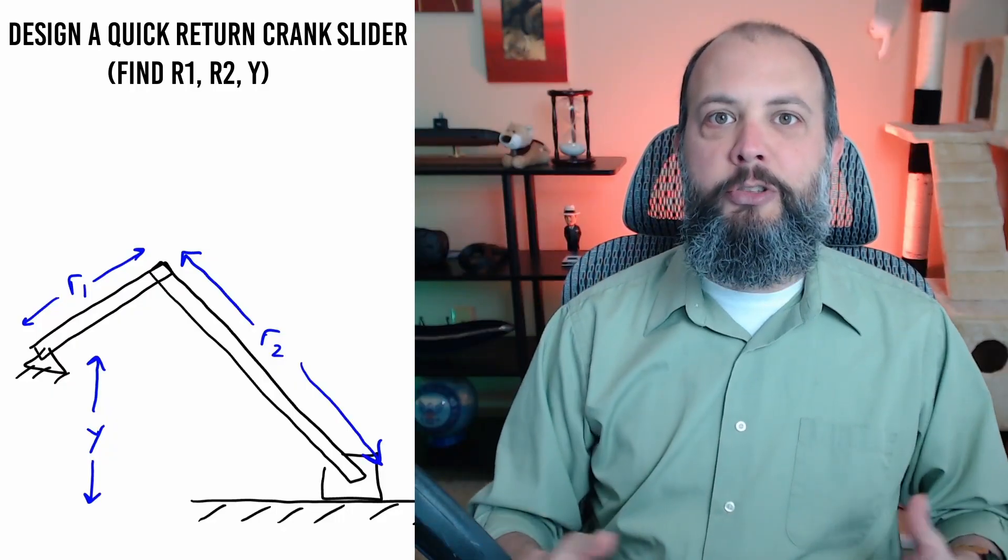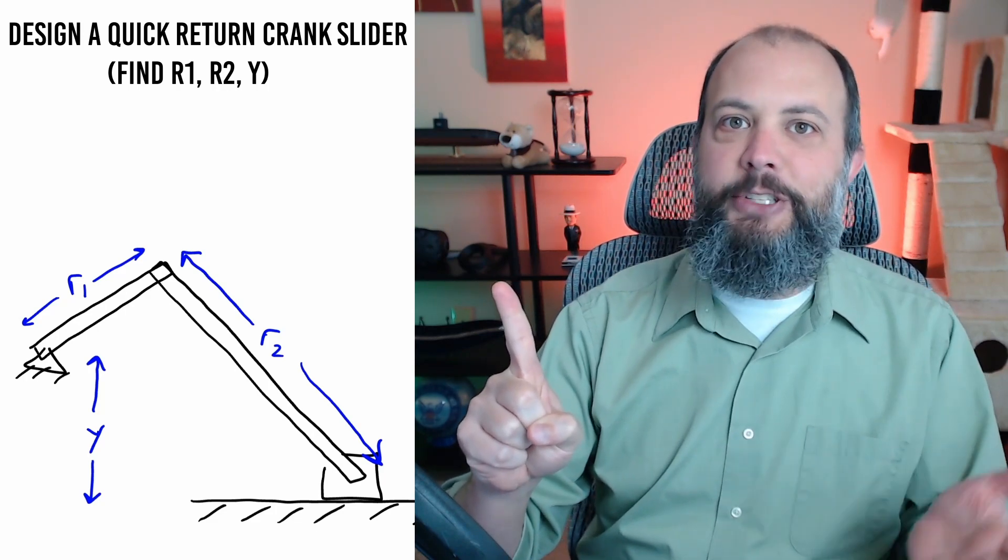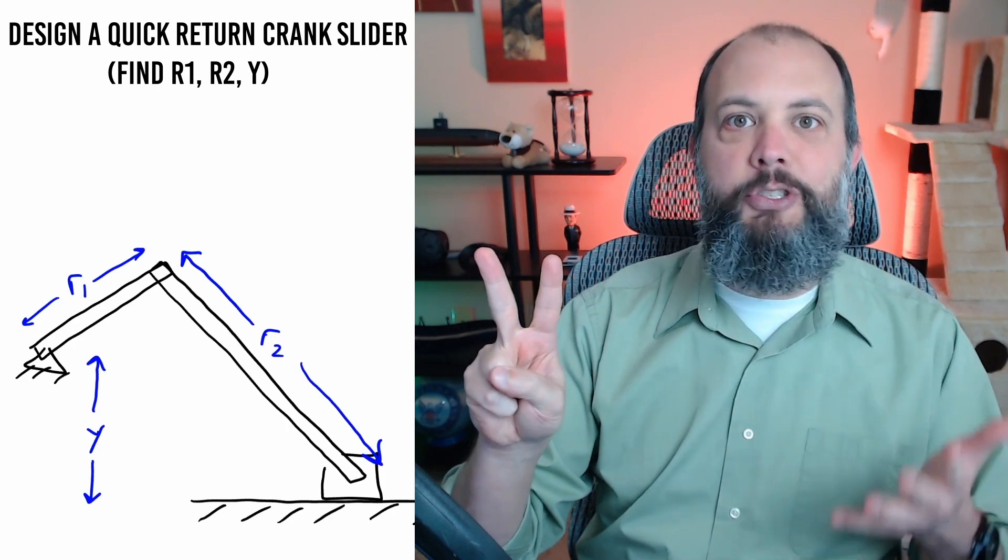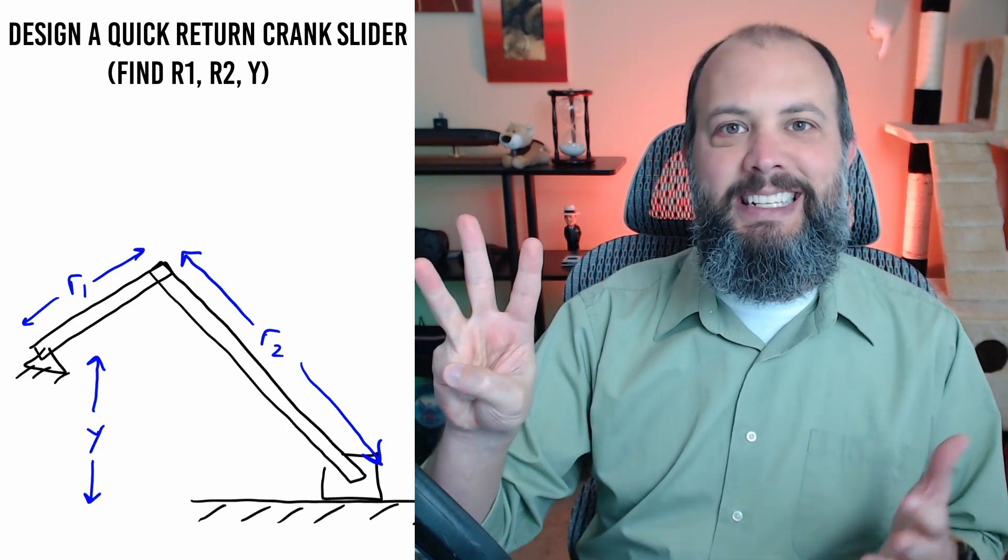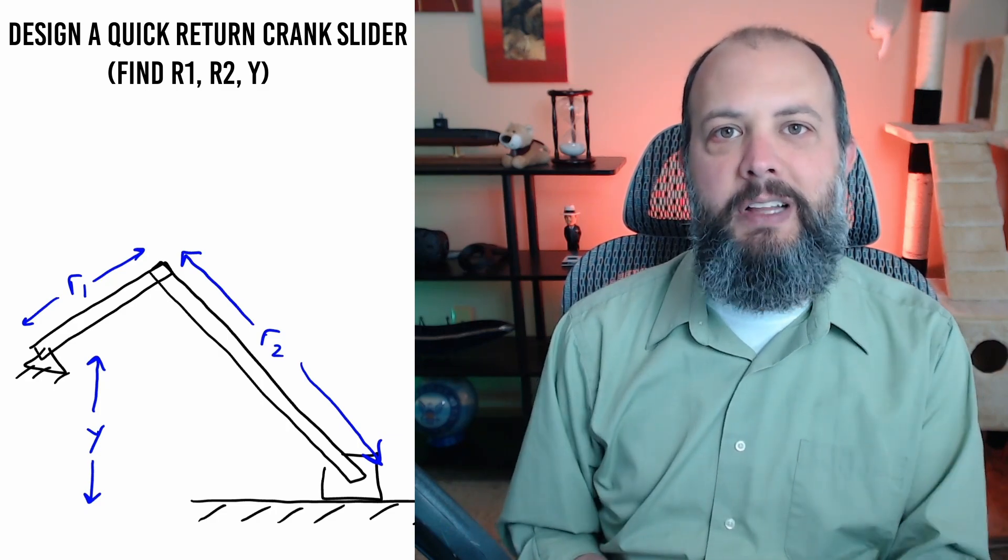To design a crank rocker there's three dimensions you need to identify. The first one is going to be the crank length which I've labeled as R1. The second is the length of your coupler which I'm labeling here as R2, and the third is going to be the distance y. This is how offset the crank hub is from the path of the slider.